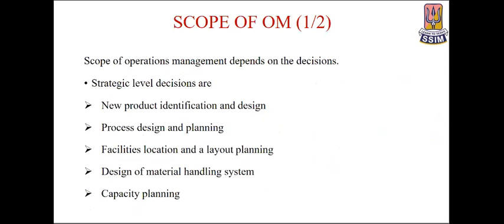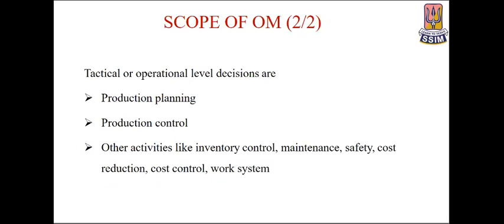The scope of operations management depends on decisions. Strategic-level decisions are long-term and made by high-level management; these include new product identification and design, process design and planning, facilities location and layout planning, design of material handling systems, and capacity planning. Tactical or operational-level decisions are taken by lower-level management and include production planning, production control, inventory control, maintenance, safety, cost reduction, cost control, and work systems.